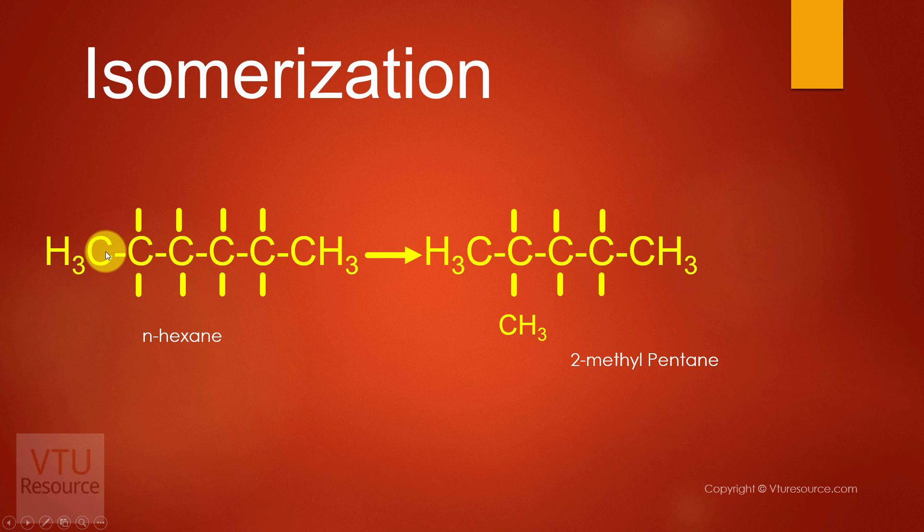So hexane, we have six carbon atoms: one, two, three, four, five, six. So after isomerization we have six carbon atoms: one, two, three, four, five, six. Therefore, we have not changed the number of carbon atoms or number of hydrogen atoms. Only the structure has been changed. Only by changing the structure, what happens? We can decrease the knocking tendency and we increase the octane number of the fuel.